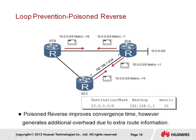In respect to convergence times affected by the count to infinity process in RIP, another mechanism was introduced to improve the time in which RIP routes would converge. The Poison Reverse mechanism is considered an improvement on the Split Horizon mechanism, and works by ignoring the Split Horizon rule that RIP routes received on an interface cannot be advertised back over that same interface, and instead proceeds to advertise the route back with a metric of 16.